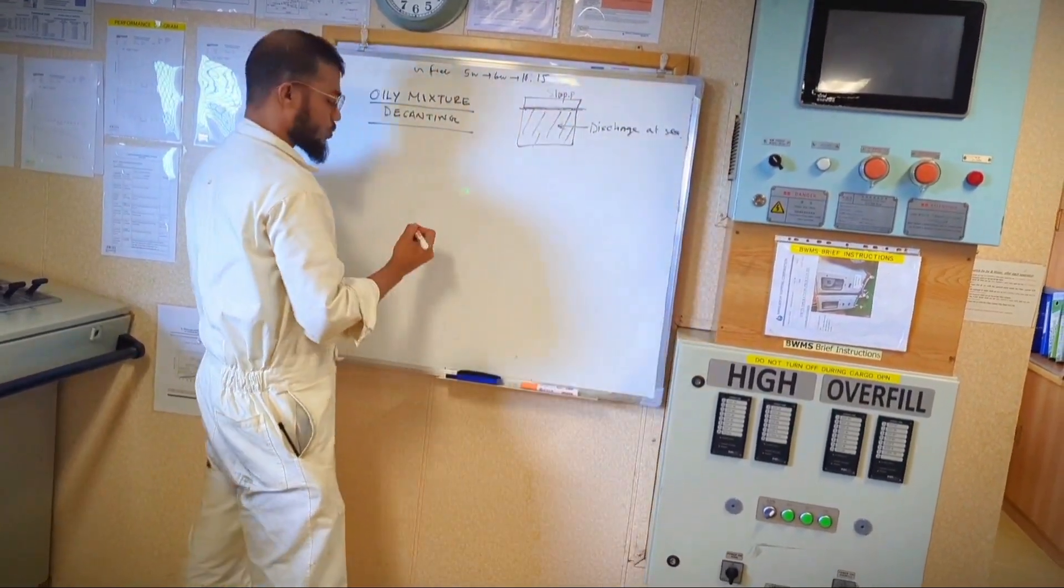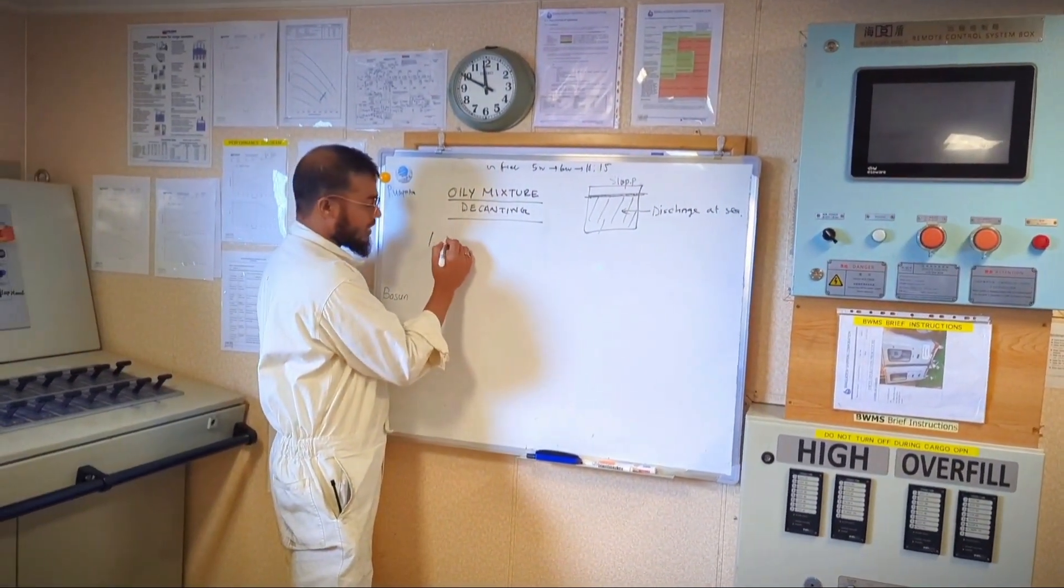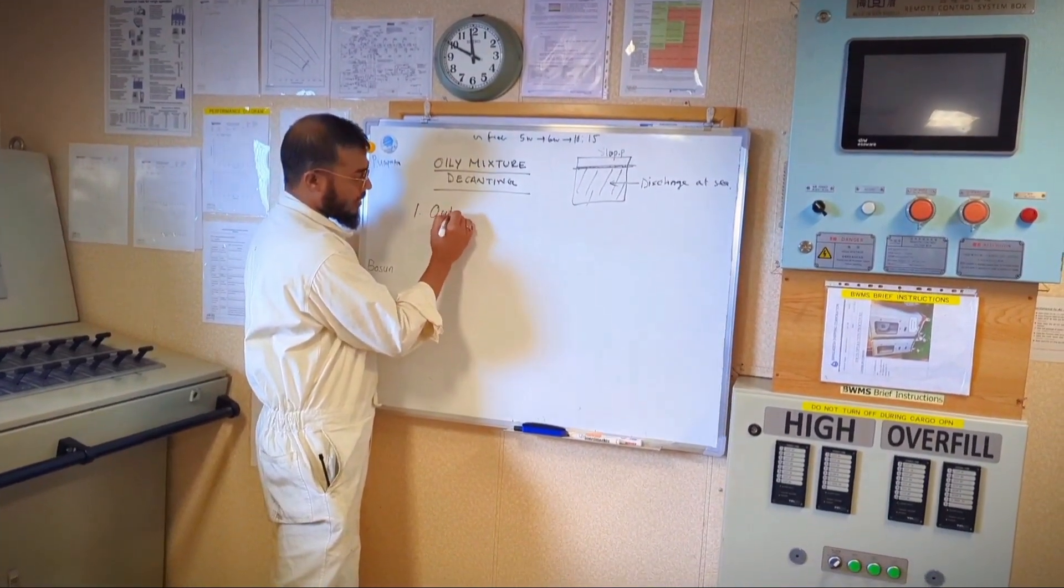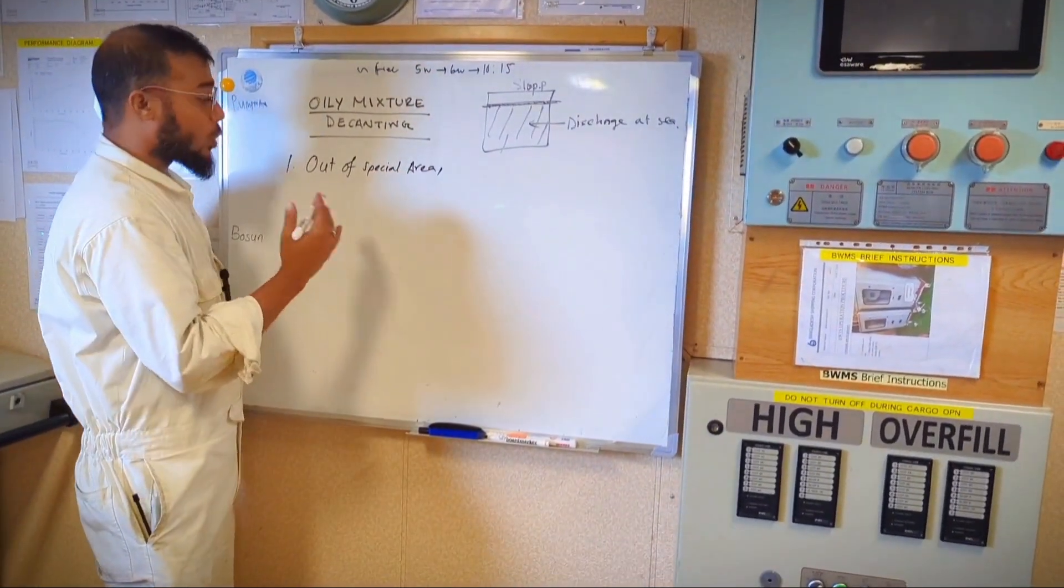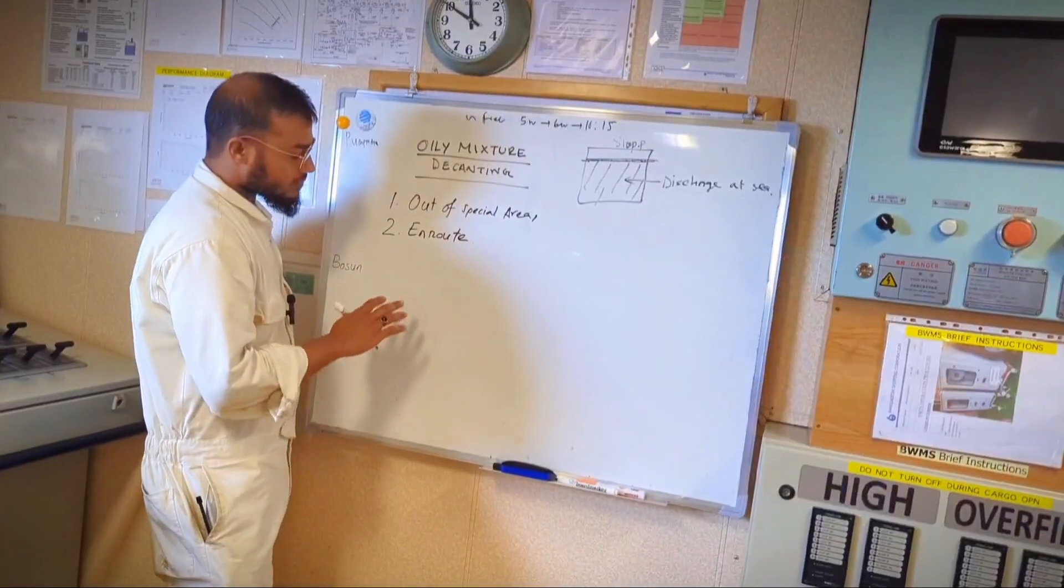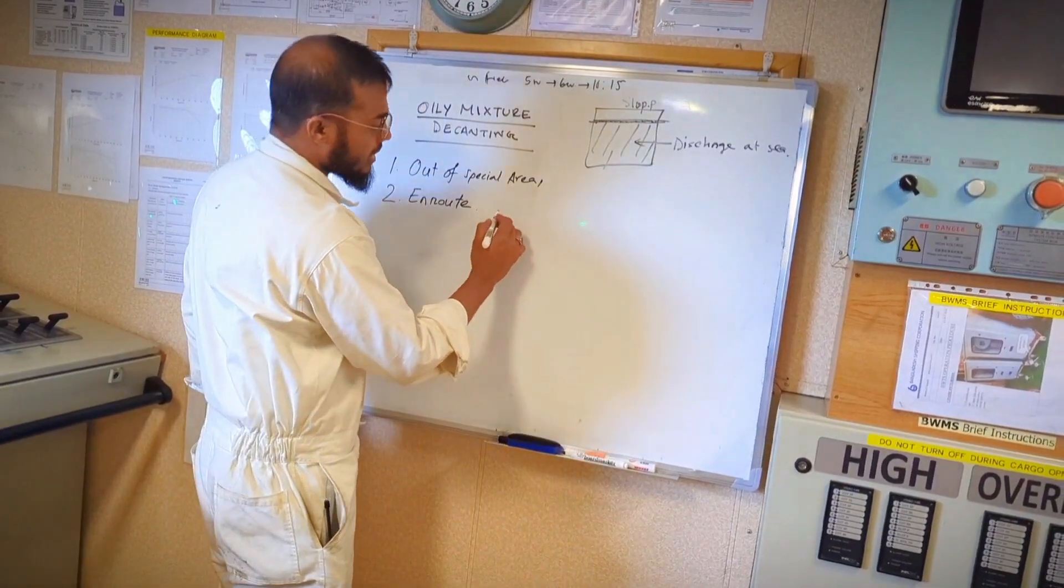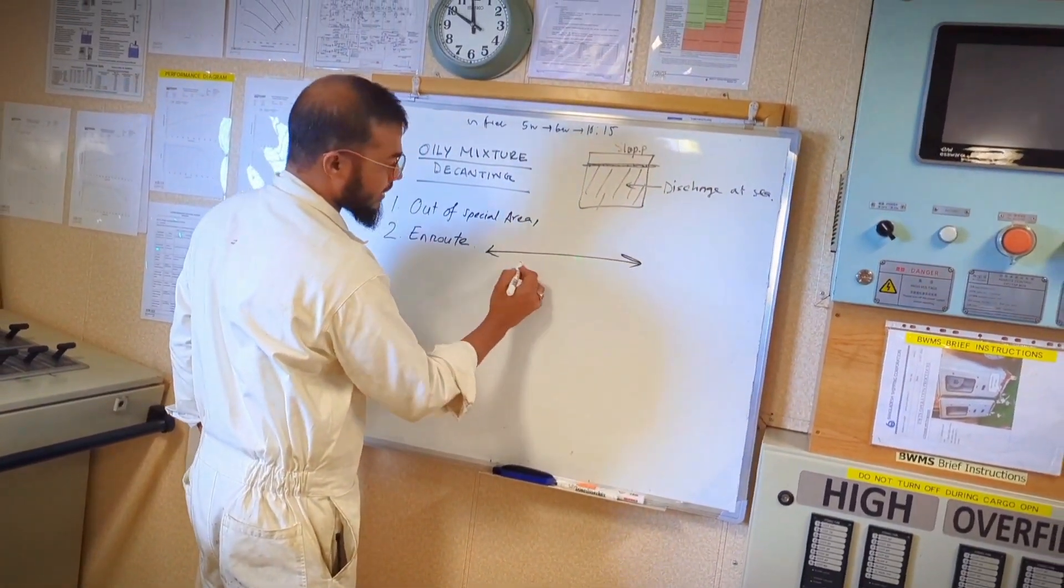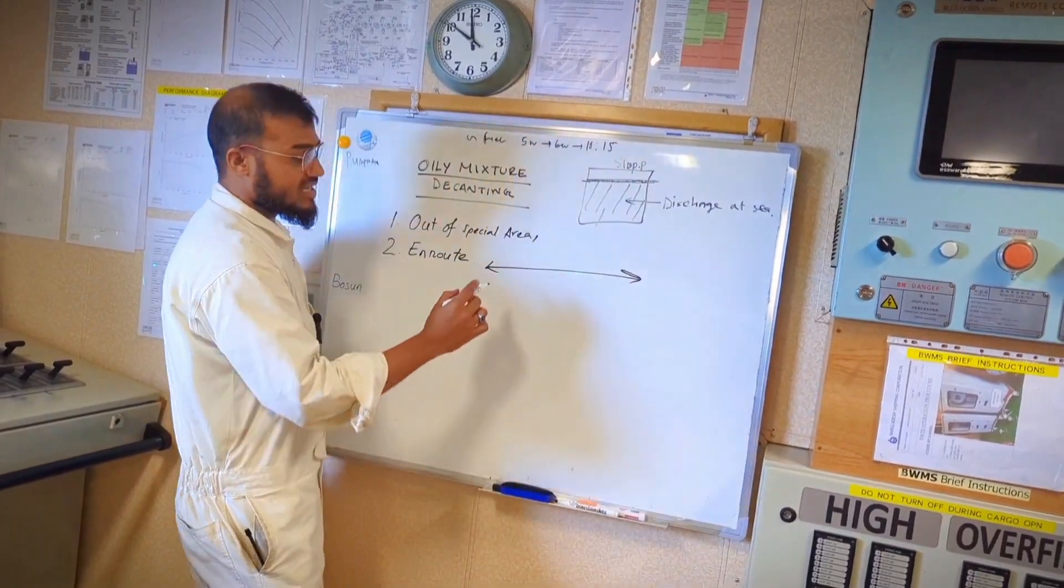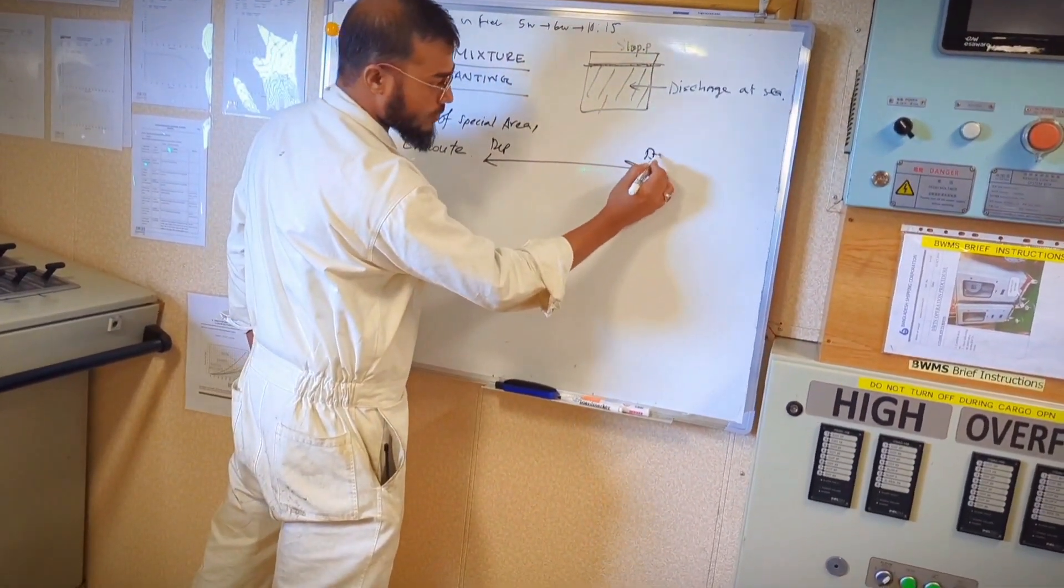What are the conditions to be met? Very first condition is your vessel has to be out of special area, that means not in special areas. Number two, your vessel has to be en route - that means it has to have a pathway. Not necessarily you have to have a departure port and then arrival port is different.